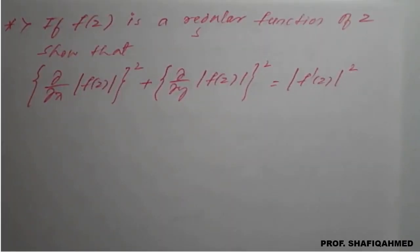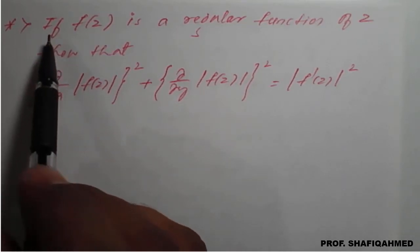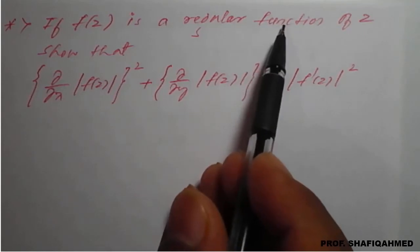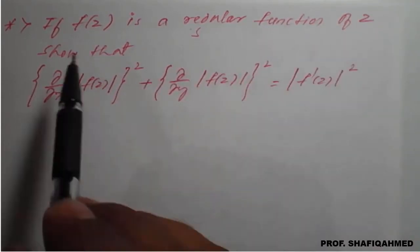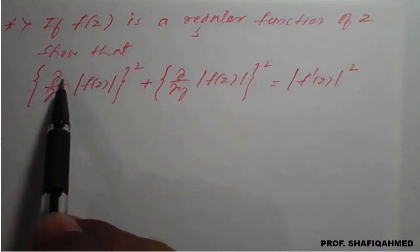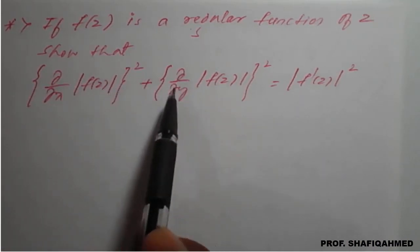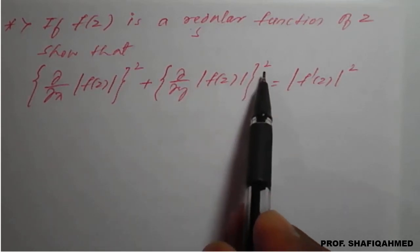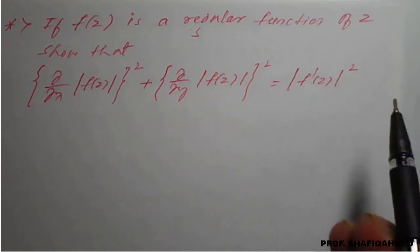Hello everyone. In this lecture, we will see one of the important properties of an analytic function, which is in the form of a problem. The problem is: if f(z) is a regular function — regular meaning analytic — show that ∂/∂x |f(z)|² + ∂/∂y |f(z)|² is equal to |f'(z)|².